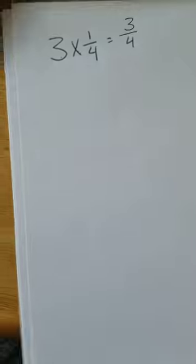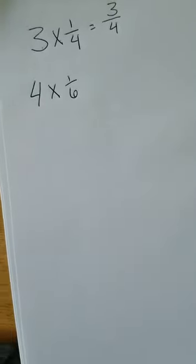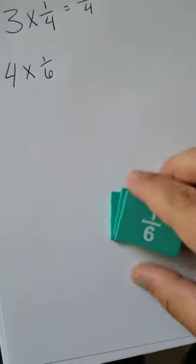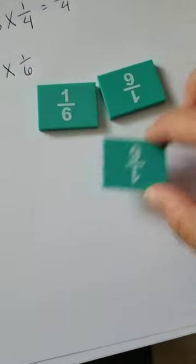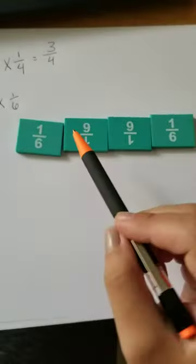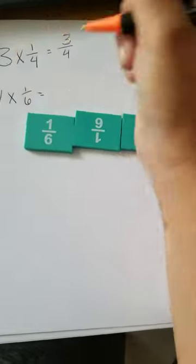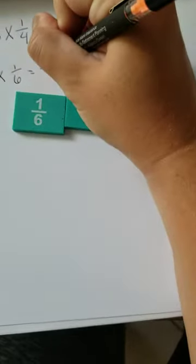Let's try another one. How about 4 groups of 1 sixth? So let me grab my fraction tiles. There's 1, 2, 3, 4. 4 groups, 1, 2, 3, 4, of 1 sixth. The product is 4 sixths.